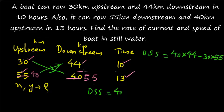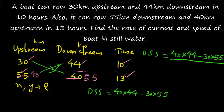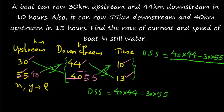The numerator for downstream speed is also (40 × 44) − (30 × 55). Now for the denominator: when finding upstream speed, you consider the downstream values. You take the cross product of the downstream distances and their times — the result must be positive. So the denominator for upstream speed is (44 × 13) − (55 × 10).